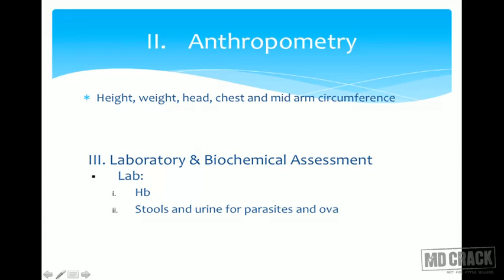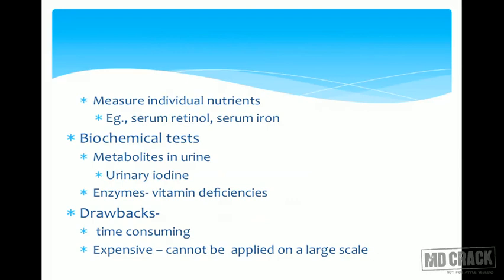Laboratory and biochemical assessment includes lab values such as hemoglobin, stool and urine for parasites and ova, and measuring individual nutrients such as serum retinol and serum iron. Biochemical tests include metabolites in the urine, urinary iodine, and enzymes measured for vitamin deficiencies. The drawbacks are that these tests are time-consuming and expensive, and therefore not feasible on a very large scale.